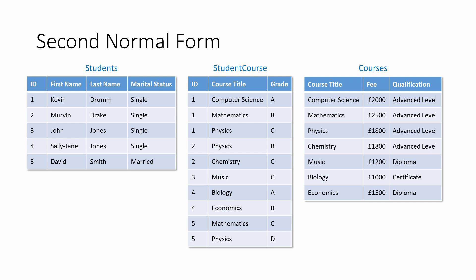Not only that, but if it becomes necessary to change something like a student's marital status, or the fee for a course or a grade, this only needs to be changed in one place, so there's less chance of inconsistent data.